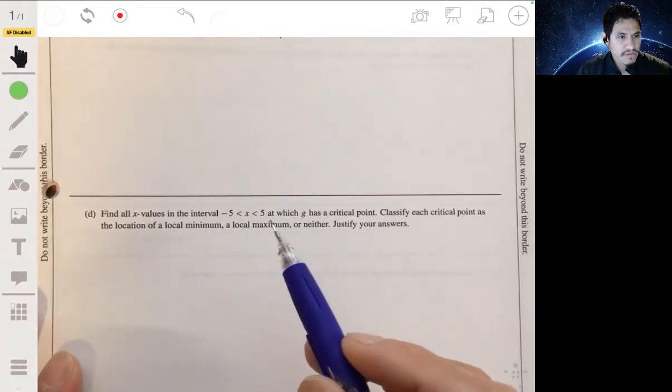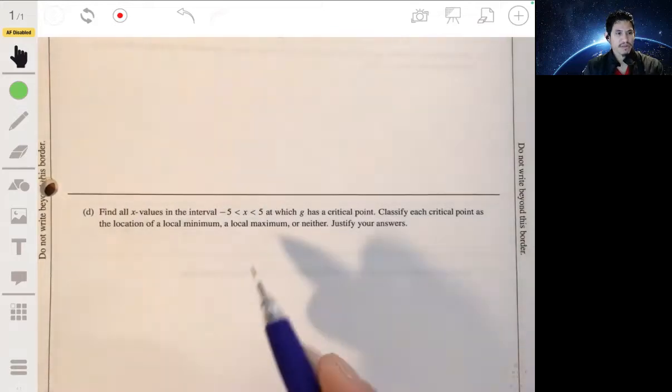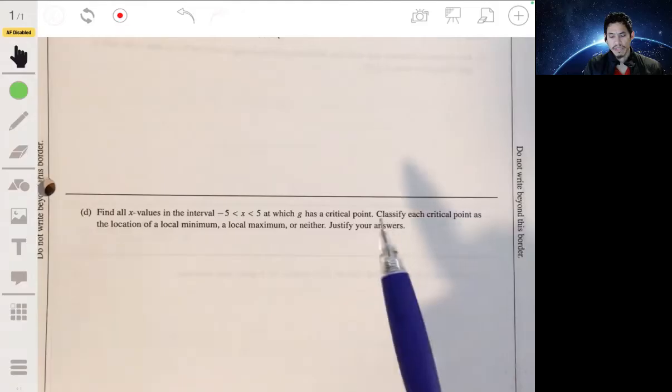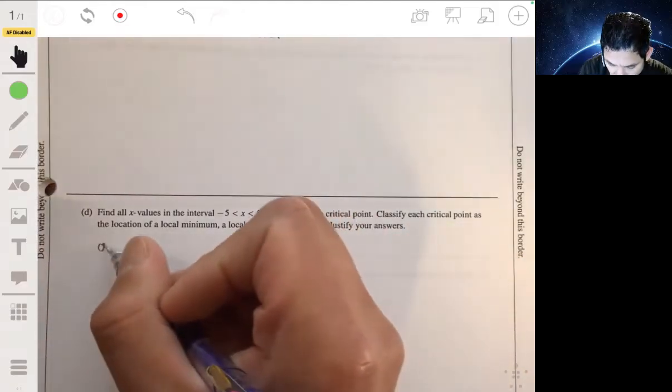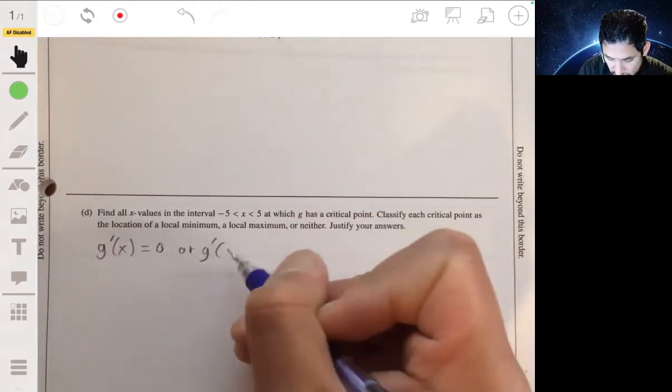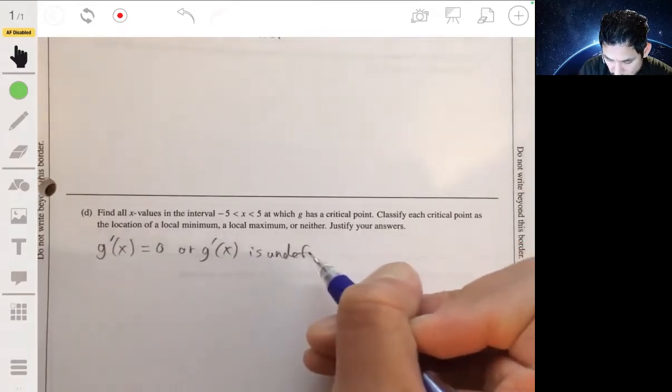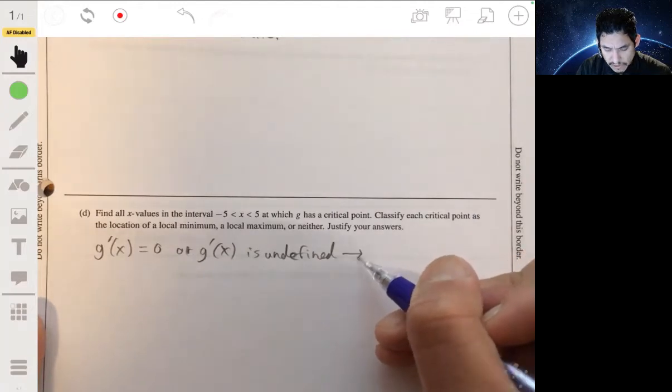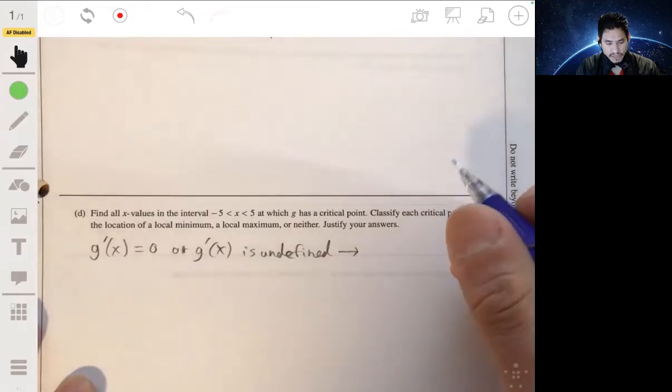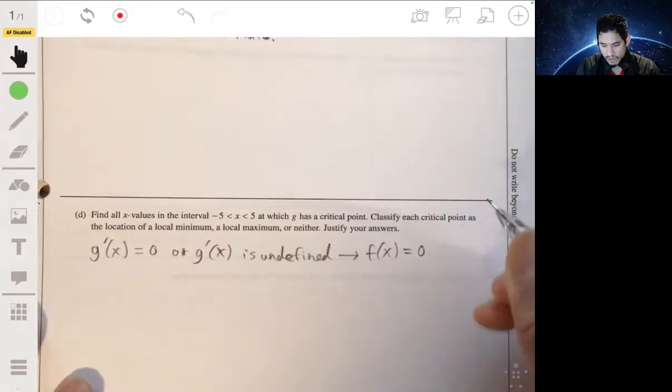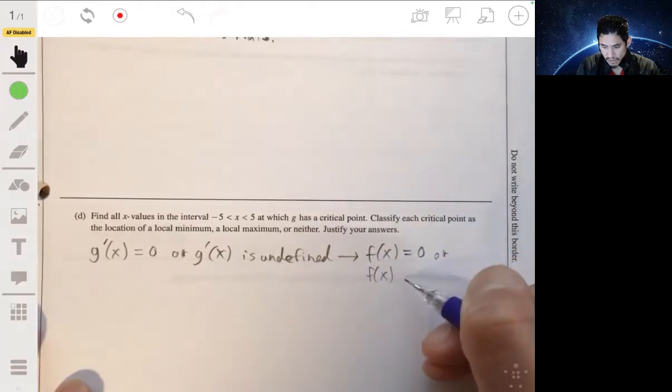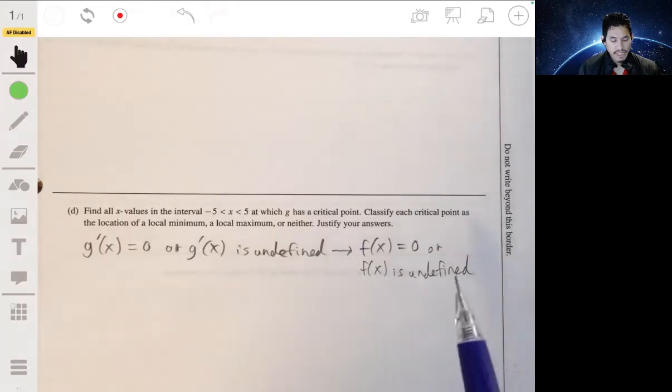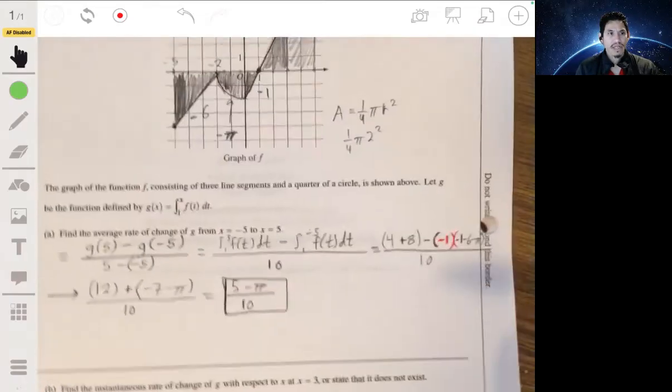Part D, final value is an interval from negative five to five, at which G has a critical point. And then classify each critical point as the location of a local minimum, maximum, or neither. Okay, so remember, critical points are where the value of the derivative of a function are either going to be zero or undefined. So critical points would be where G prime of x is equal to zero or where G prime of x is undefined. Now, since remember, G prime of x is equal to f of x, you want to essentially find where is f of x equal to zero or where is f of x undefined.